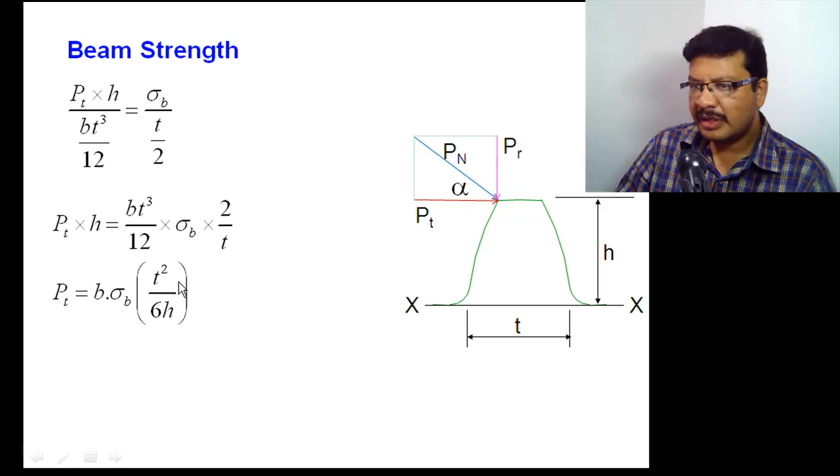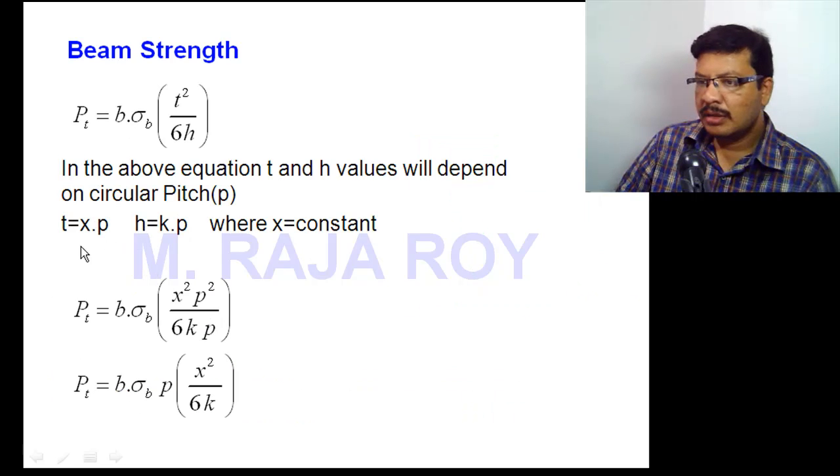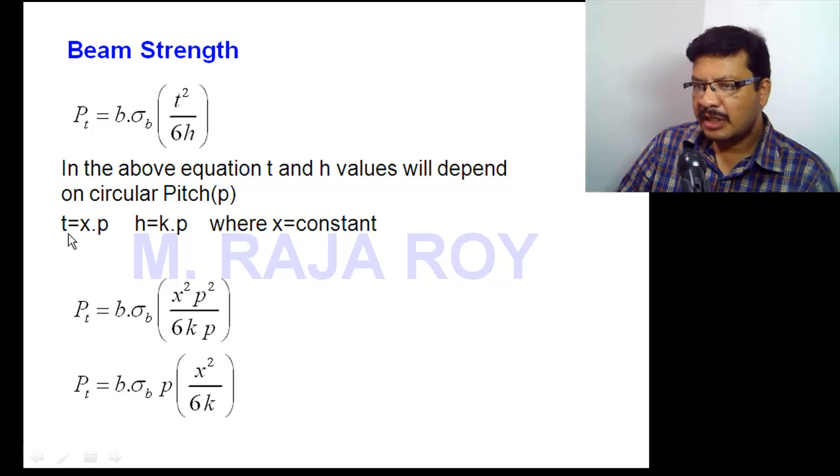Now observe these terms. T, this thickness at the root, then height h. These two parameters depend on the circular pitch. It will depend only on the circular pitch. So, in terms of circular pitch, I am taking this t and h values. That means t equal to some constant x into circular pitch. h equal to some constant k into circular pitch.